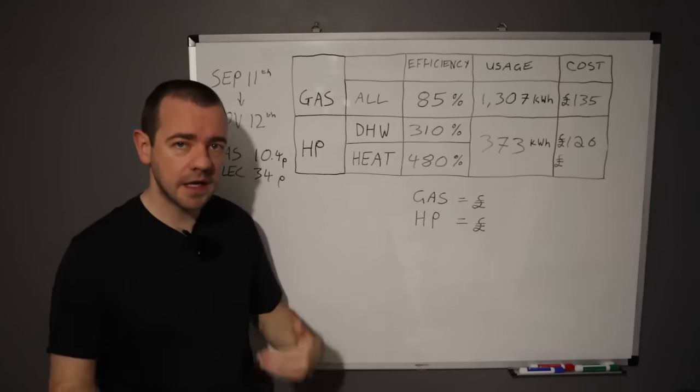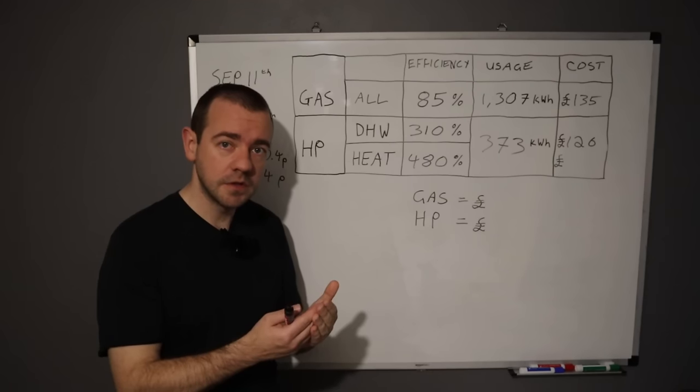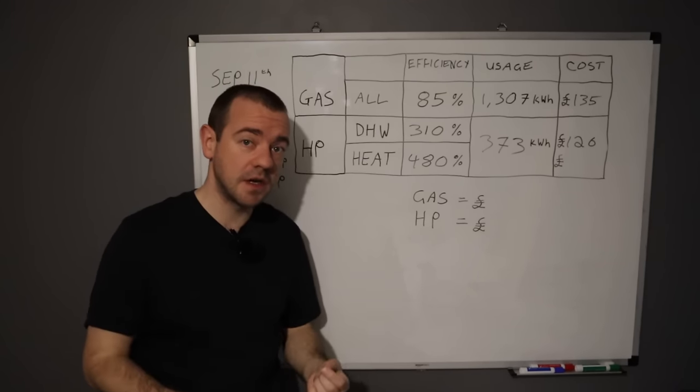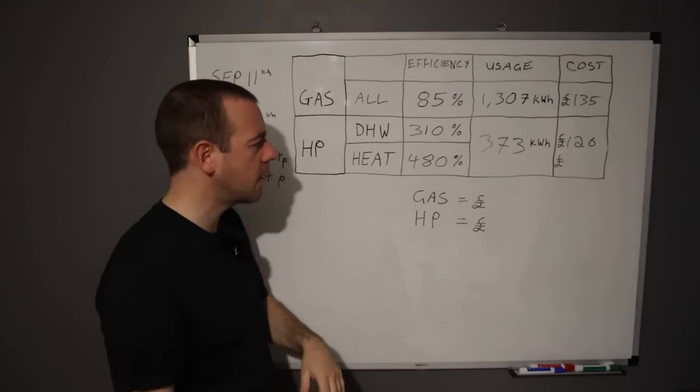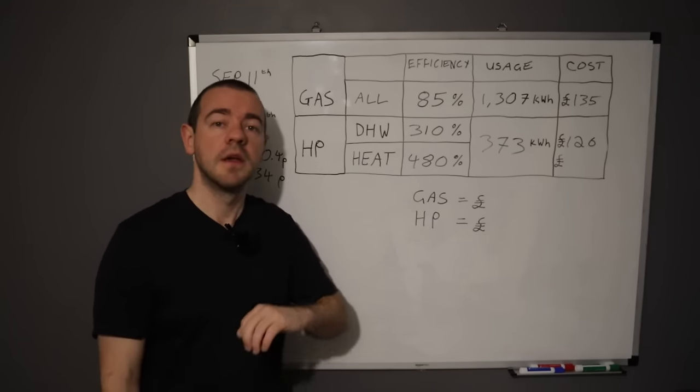Now let's look at how much it's cost us on our tariff, which is Octopus Go. That's four hours of cheap and 20 hours of expensive, and I'm going to use today's prices, not the one that we're still on for now. That's 12 pence for the four hours and I think 40 pence for the other 20.